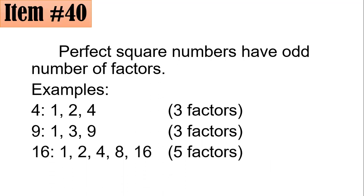For 16: its factor pairs are 1 times 16, 2 times 8, and 4 times 4. Since 4 is duplicated, write it once. So 16 has 5 factors: 1, 2, 4, 8, and 16. If you answered A, you got it correctly.